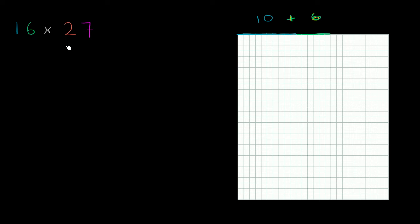Now let's think about 27. We already know that the 2 in the tens place is representing 20. So let's count off 20. So it's 1, 2, 3, 4, 5, 6, 7, 8, 9, 10, 11, 12, 13, 14, 15, 16, 17, 18, 19, 20. So up until that point right over here, this line has a length of 20.